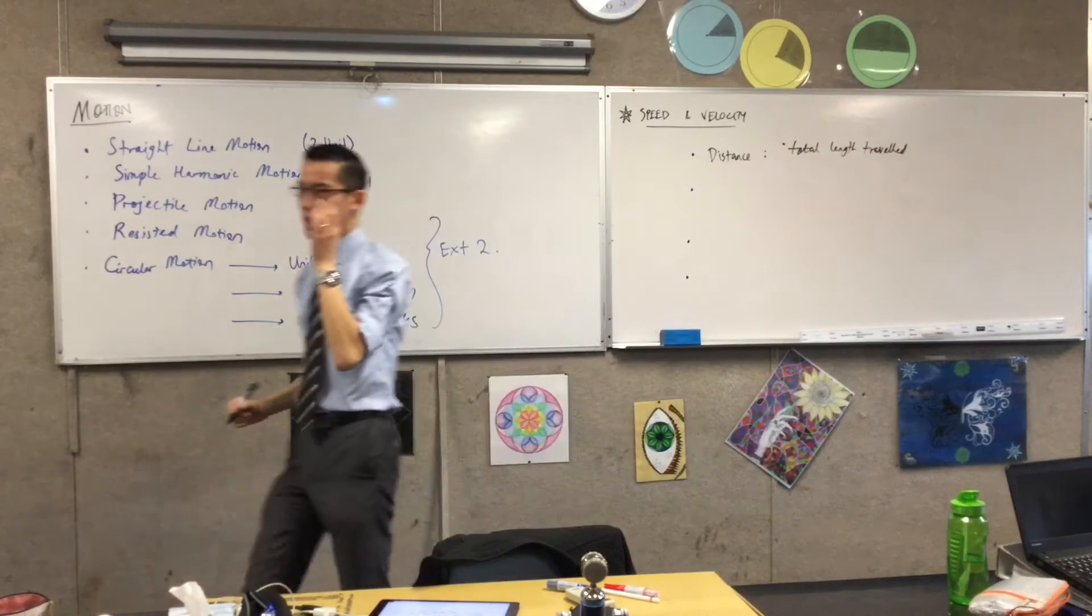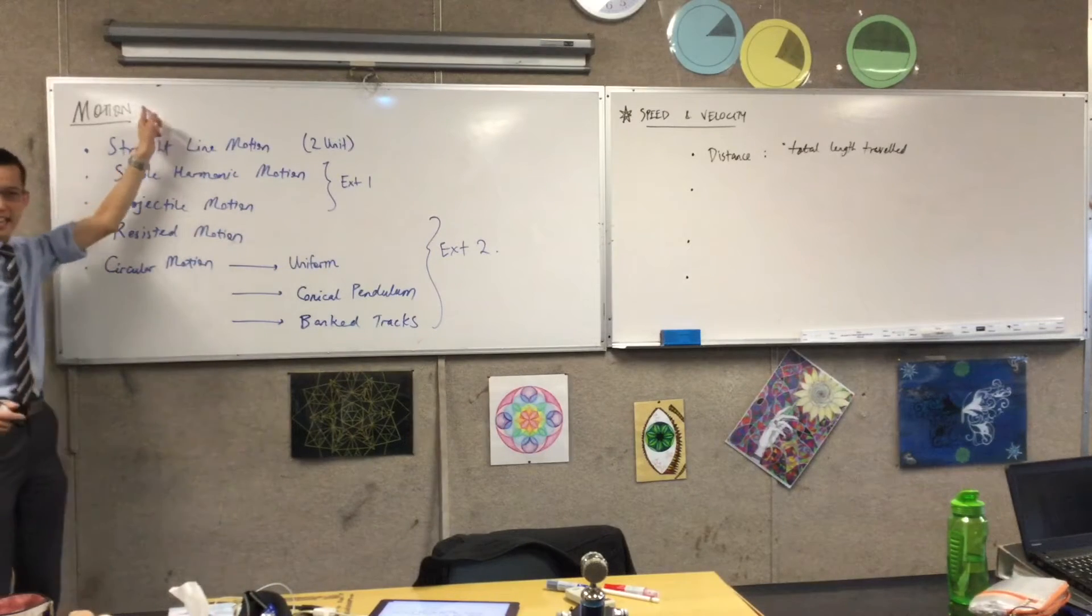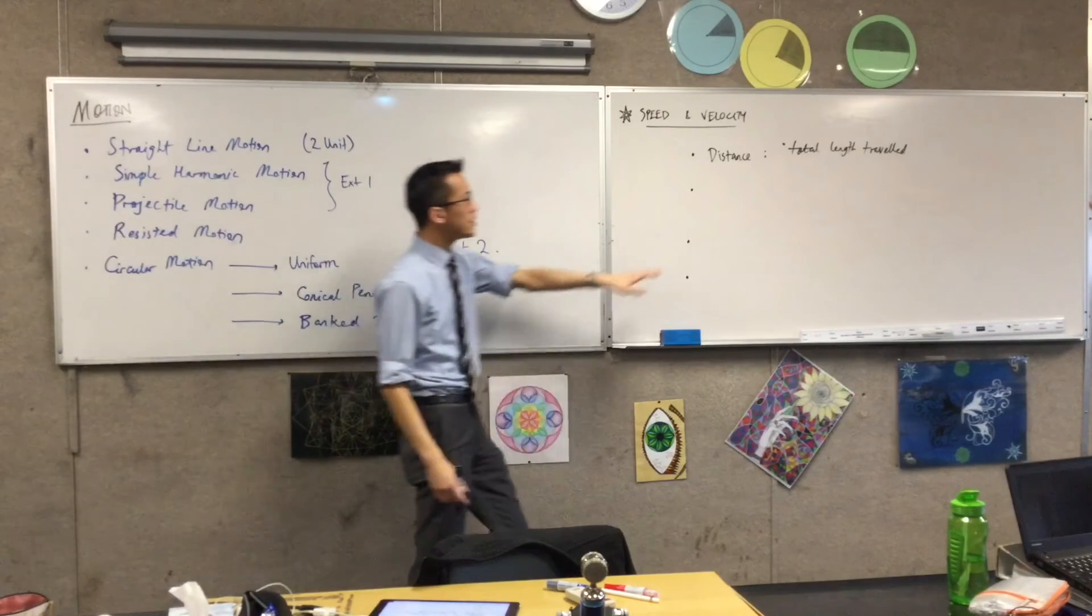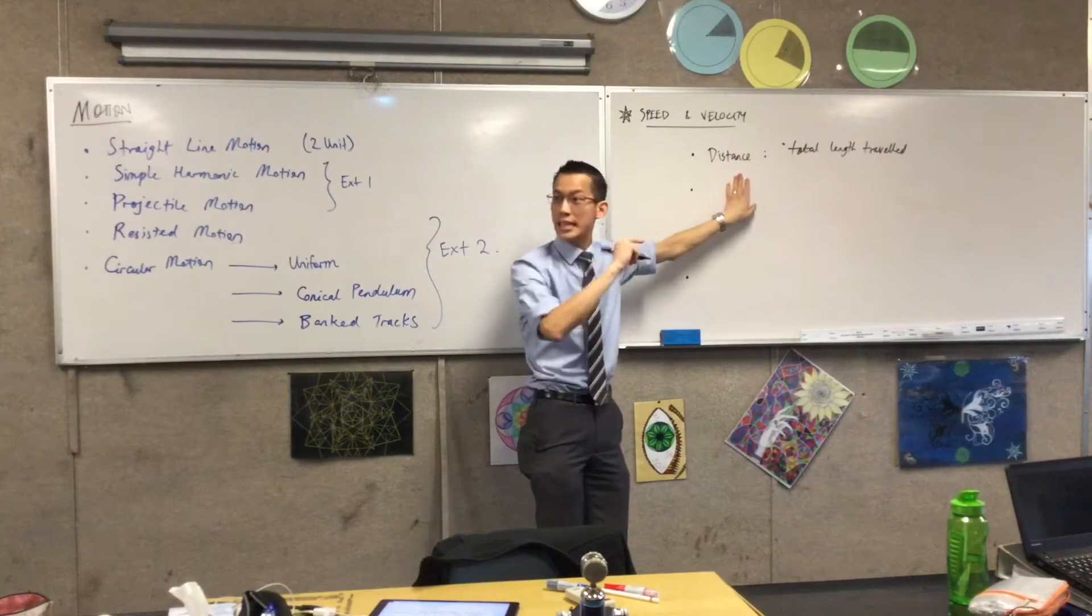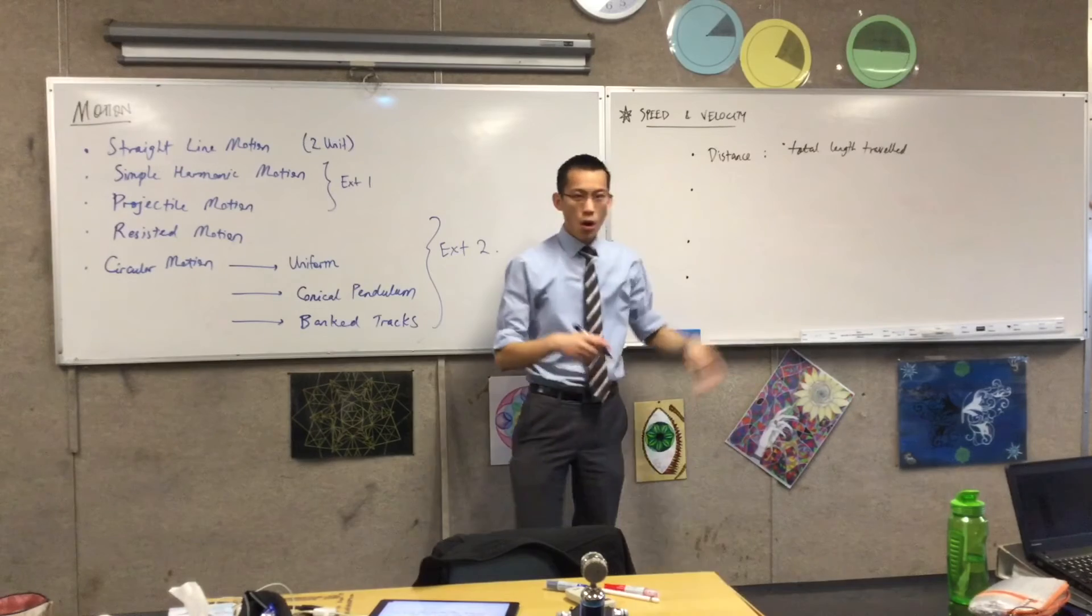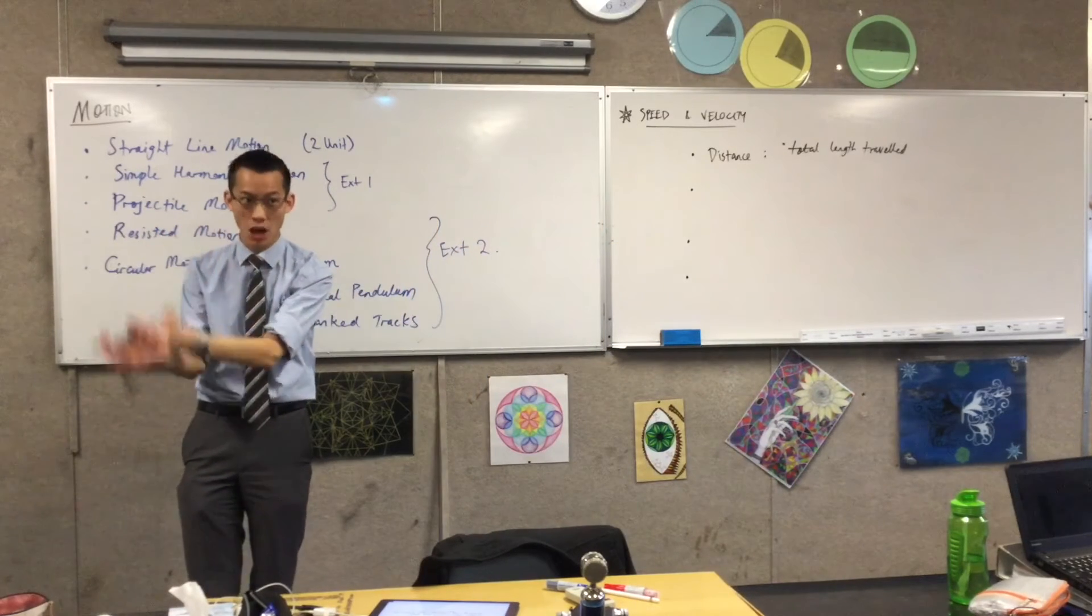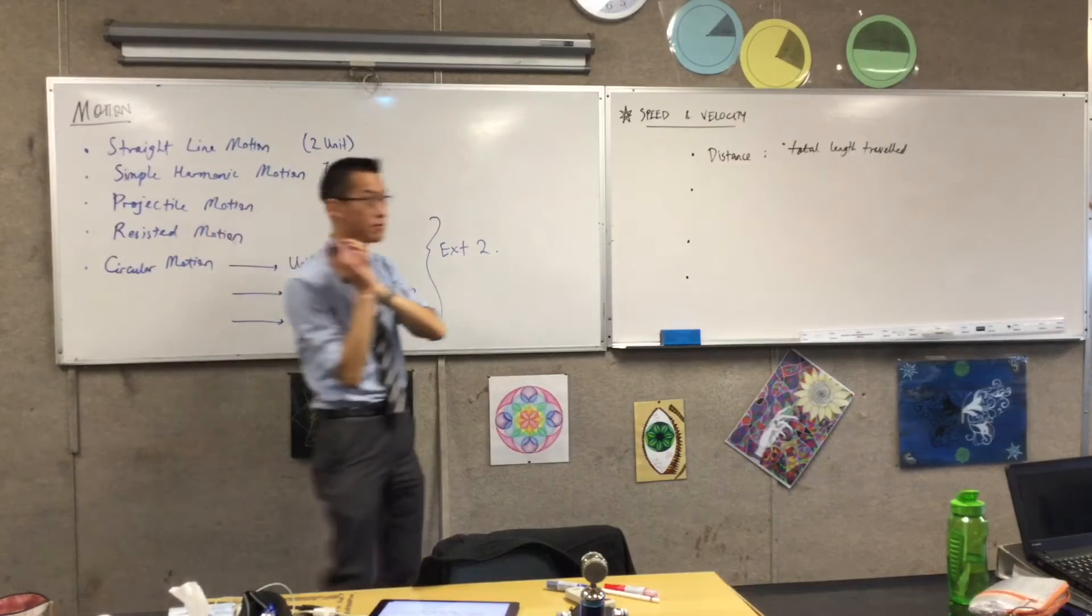Now once you understand that, remember this is about connecting and comparing these different changing quantities. If we say distance, that's a quantity and it can change. We call the change of distance with respect to the change in time, we call that speed.